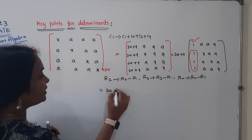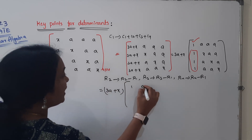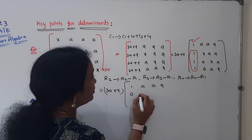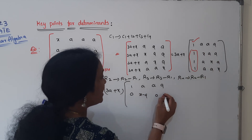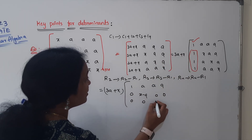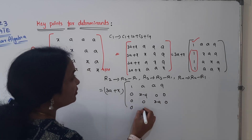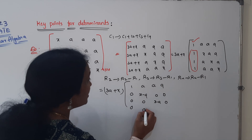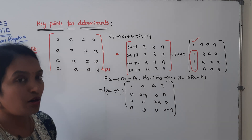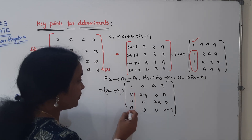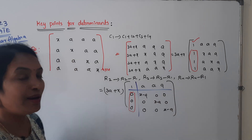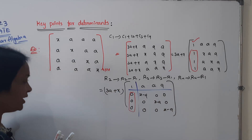After the operations, we have 3a plus x common from the first column. The first row remains: 1, a, a, a. For the remaining rows: 1 minus 1 = 0, x minus a = x minus a, a minus a = 0, a minus a = 0. The first column of subsequent rows becomes 0, and x minus a appears on the sub-diagonal.